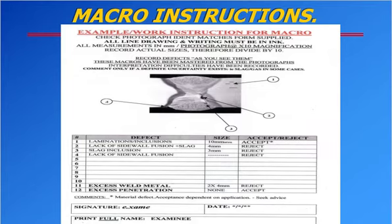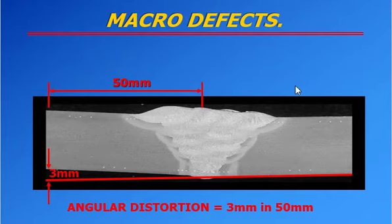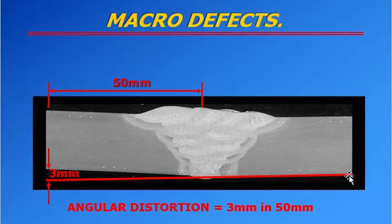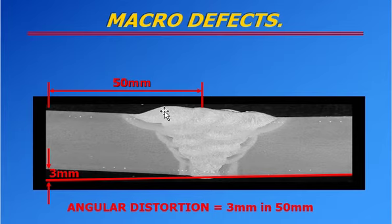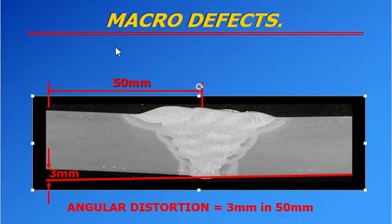Now let's discuss the first type of defect — angular distortion. This is 3 mm in 50 mm. The 50 mm is measured from the middle of the weld to one side, left hand side. So in that 50 mm, the angular distortion is clearly 3 mm. You have to check in the acceptance criteria whether it is acceptable — if acceptable, put 'accept'; otherwise put 'reject'.